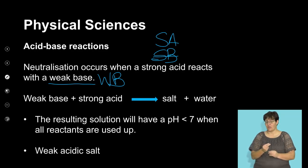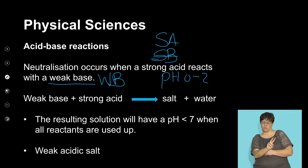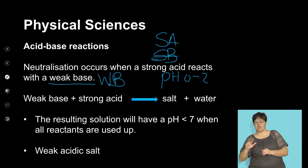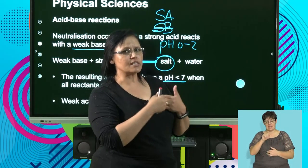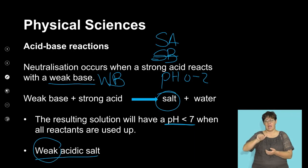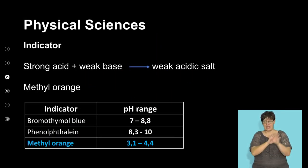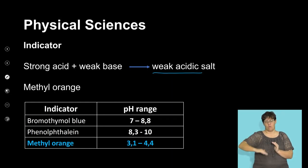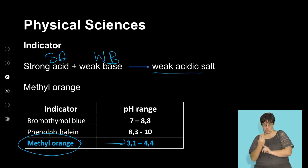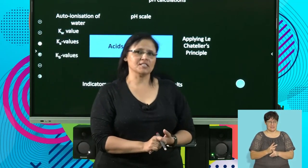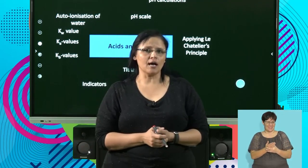When we have a strong acid with a weak base — the strong acid having a pH of between 0 and 2, and the weak base having a pH just bigger than 7 — when the two react and form a salt, the resulting solution will have a pH smaller than 7. A pH smaller than 7 means the salt will be a weak acidic salt. The color change should be at a pH a bit lower than 7, and in this case we use methyl orange as our indicator.